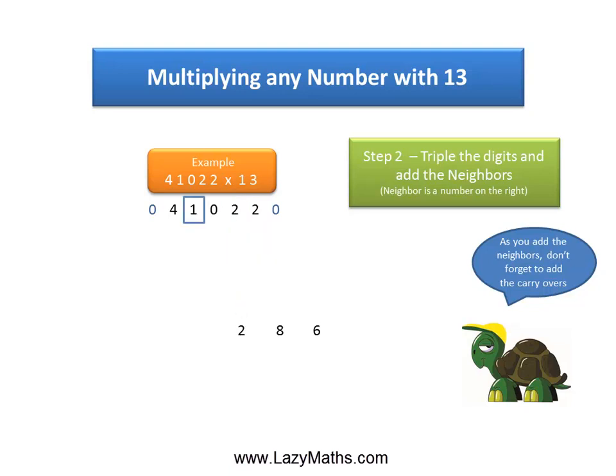And then the next pair: 1 and 0. Triple of 1 is 3, plus the neighbor 0 gives us 3.